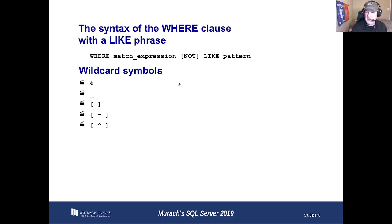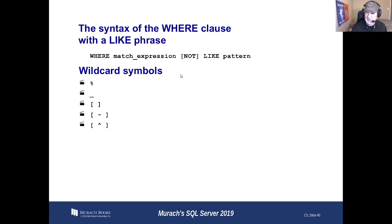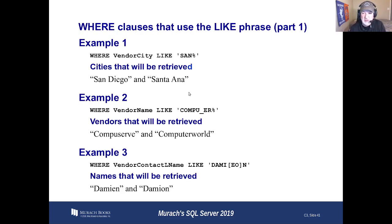Now, you can use wildcards. These patterns we talked about last time. I just want to make sure you got it in your head that the percent sign is basically to the end of the line. Percent sign is starting with some characters and then the end of the line. The underscore is a single character, especially if you don't know spellings.